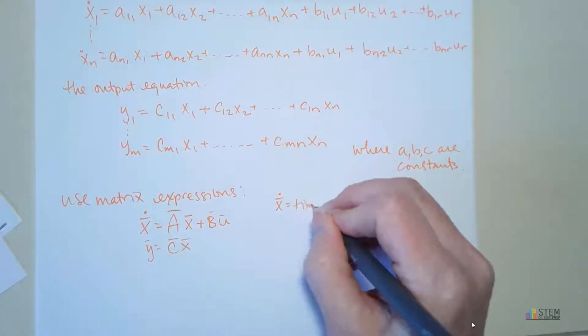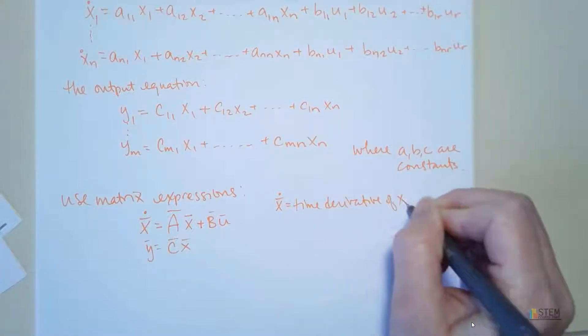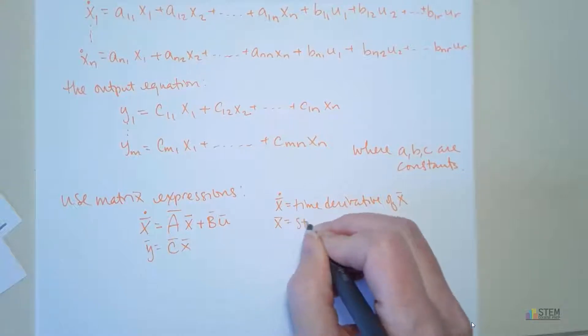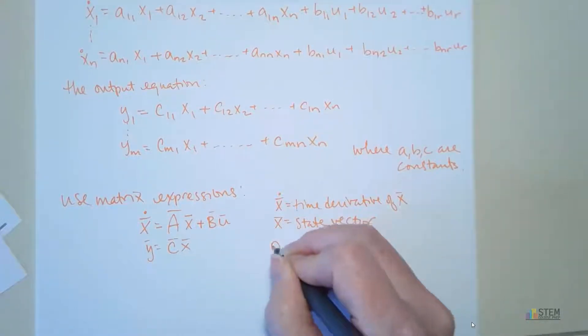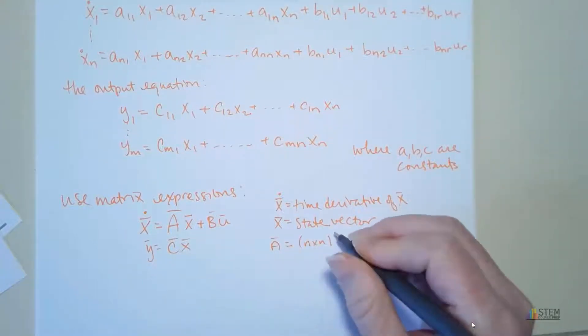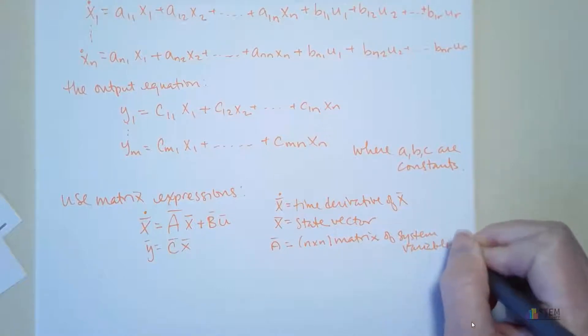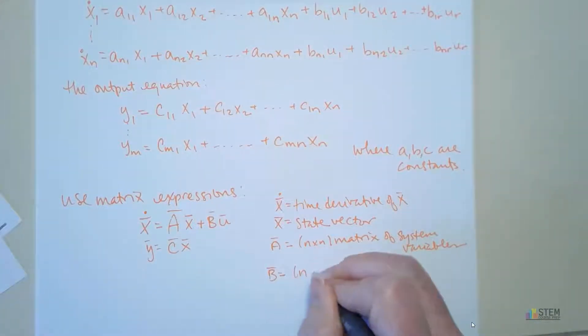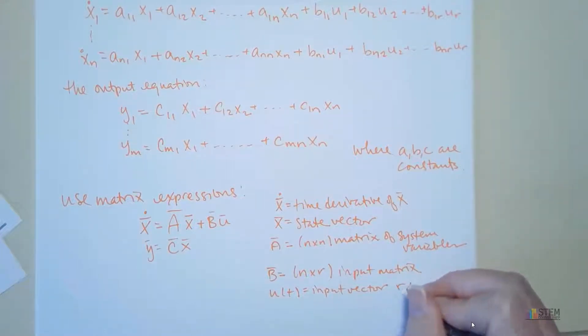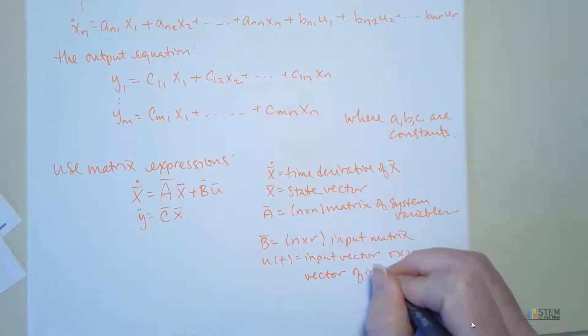So x dot is the time derivative of x, where x is your state vector. And then matrix A, that's going to be an n by n. And it's a matrix of system variables. And then matrix B is going to be an n by r input matrix. U of t, that's an input vector. And basically that's an r by 1 vector that's composed of your input functions. So that's what we're going to have.